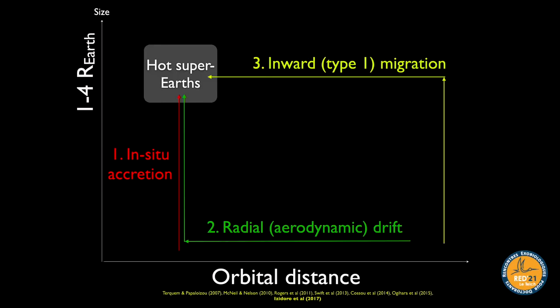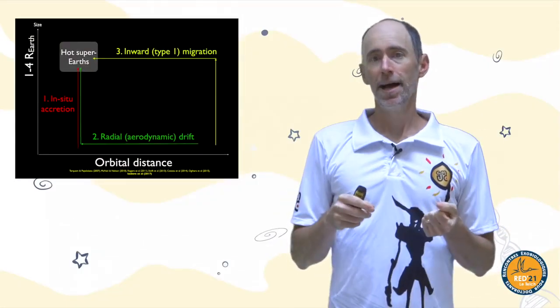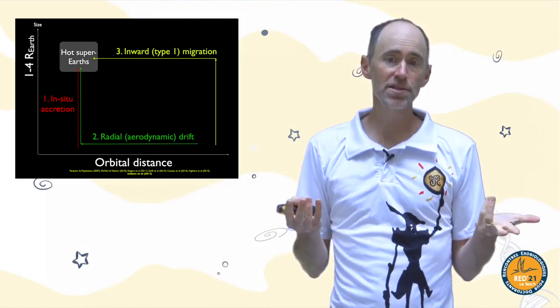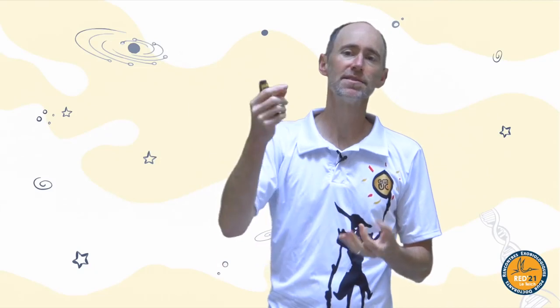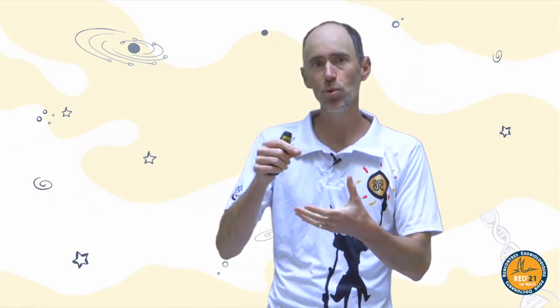The other idea is that larger things move inward: planetary embryos or almost full-size planets that grew mostly further out migrate inward at large sizes. That's the migration model. As we'll see, both the drift model and the migration model are plausible, and the in-situ model is not.